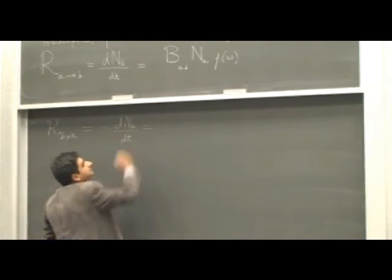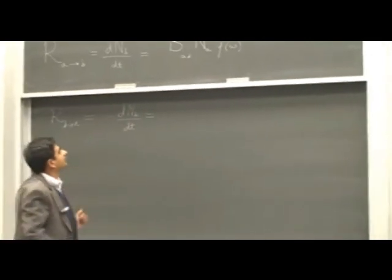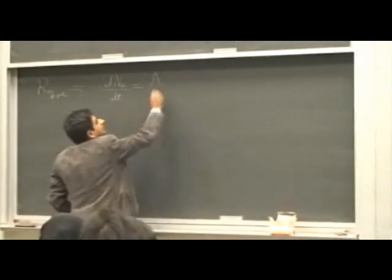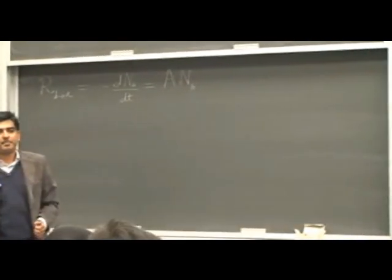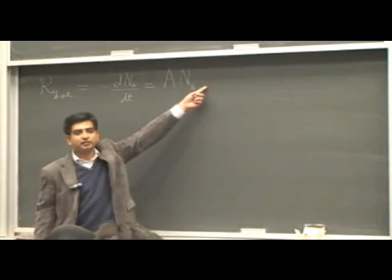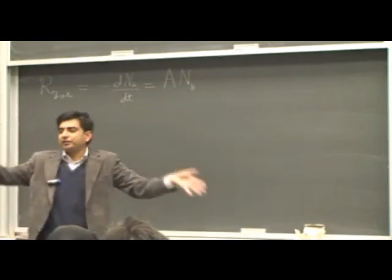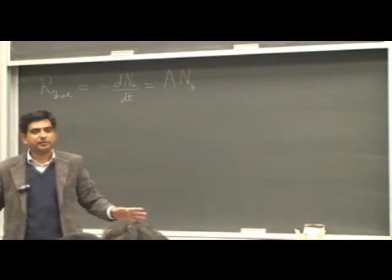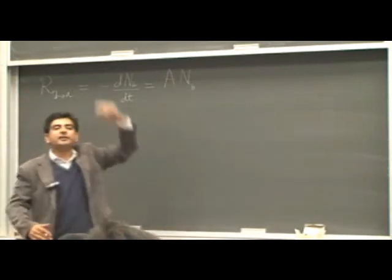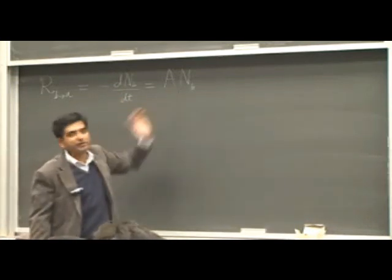And this equals, let's first consider spontaneous emission. This equals a constant A times N_B. Do we put a density of states here as well? No, because spontaneous emission is oblivious of the presence of photons. It does not depend on the presence of photons. It only depends upon the number of electrons that are in the higher level and some constant A.